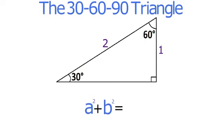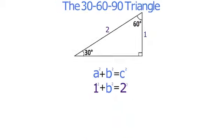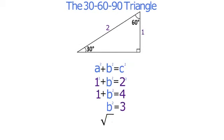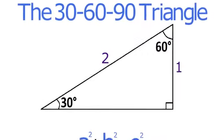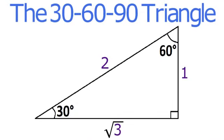You can use the Pythagorean Theorem to calculate the length of the longer leg. Here we fill in 1 for A and 2 for C and solve for B. So the longer leg of the 30-60-90 triangle has a length of radical 3.